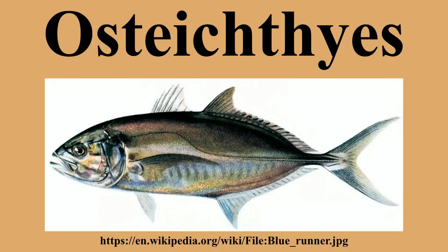The ocean sunfish is the largest bony fish in the world, while the longest is the king of herrings, a type of oarfish. Specimens of ocean sunfish have been observed up to 3.3 meters in length and weighing up to 2,303 kilograms. Other very large bony fish include the Atlantic blue marlin, some specimens of which have been recorded in excess of 820 kilograms, the black marlin, some sturgeon species, and the giant and goliath grouper, which both can exceed 300 kilograms in weight.